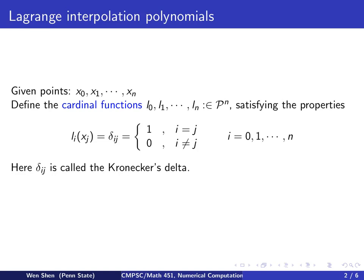Given a data set, in particular, given the points for the x values as x0, x1, and all the way to xn, n plus 1 such points. Using that information, we're going to define something called the cardinal functions, denoted as function l0, l1, and all the way to ln. These are functions of x, and each of them is a polynomial of degree n.